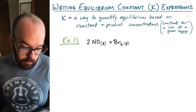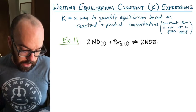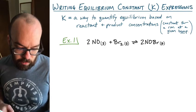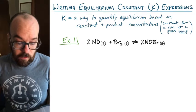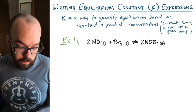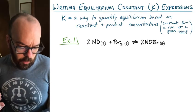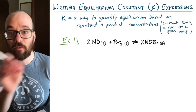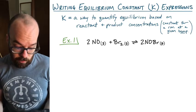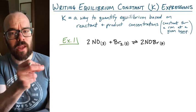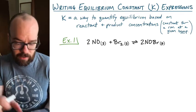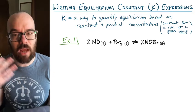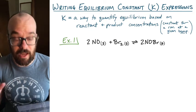Our first example is this: we have two nitrogen monoxide gas plus bromine gas in equilibrium with two NOBr gas. Two gas molecules combine to form one gas molecule on the right, but that one gas molecule can decompose back into NO and Br₂, so we have this existing at an equilibrium.